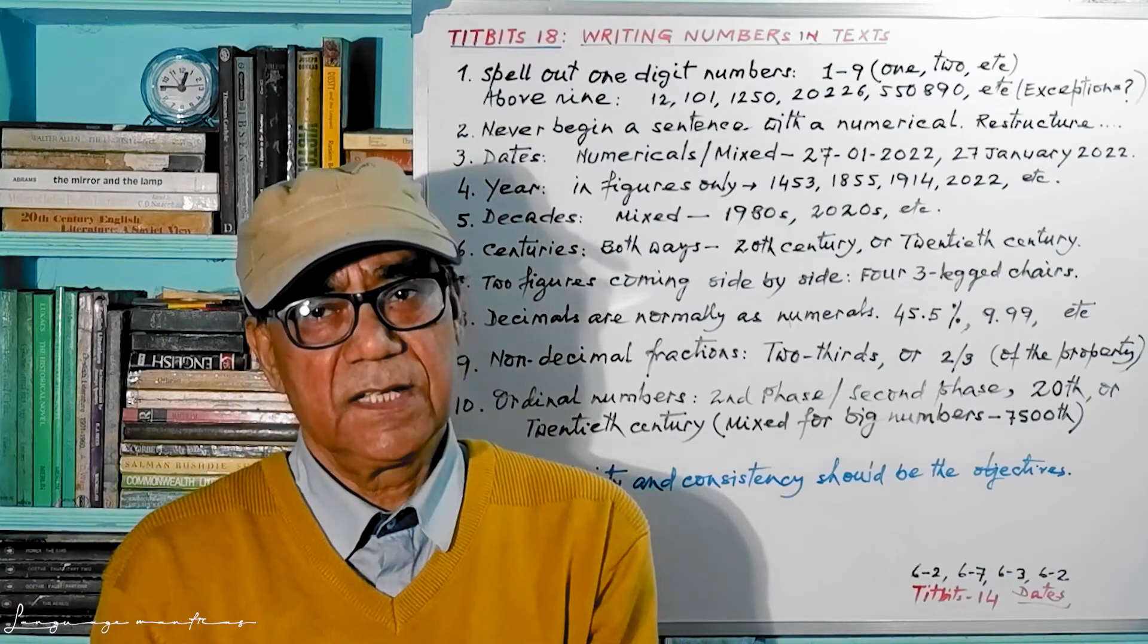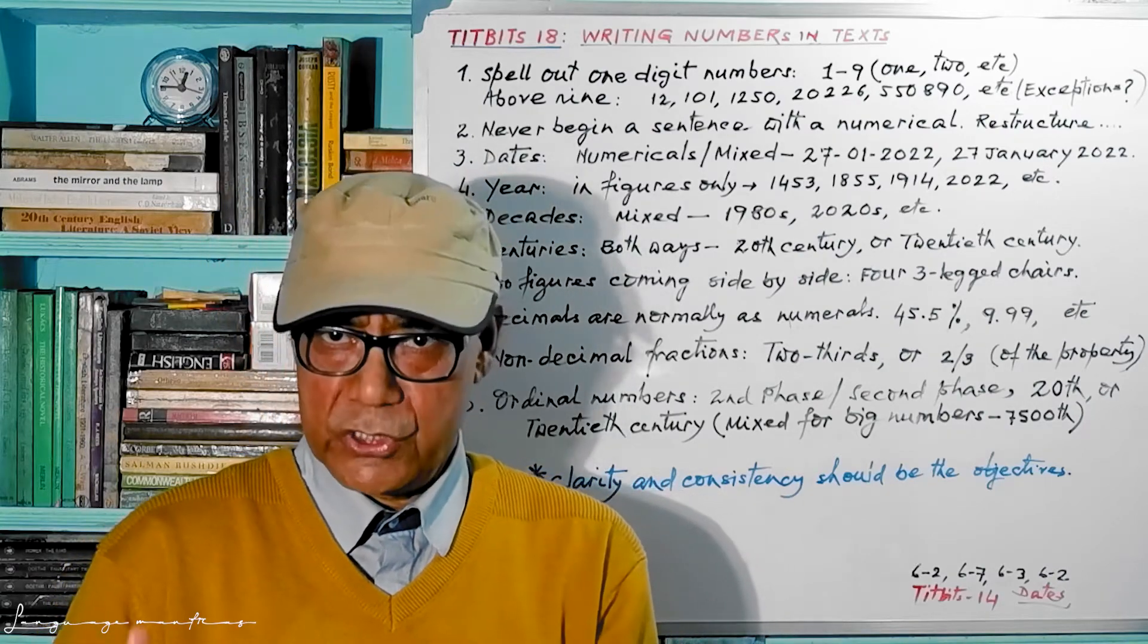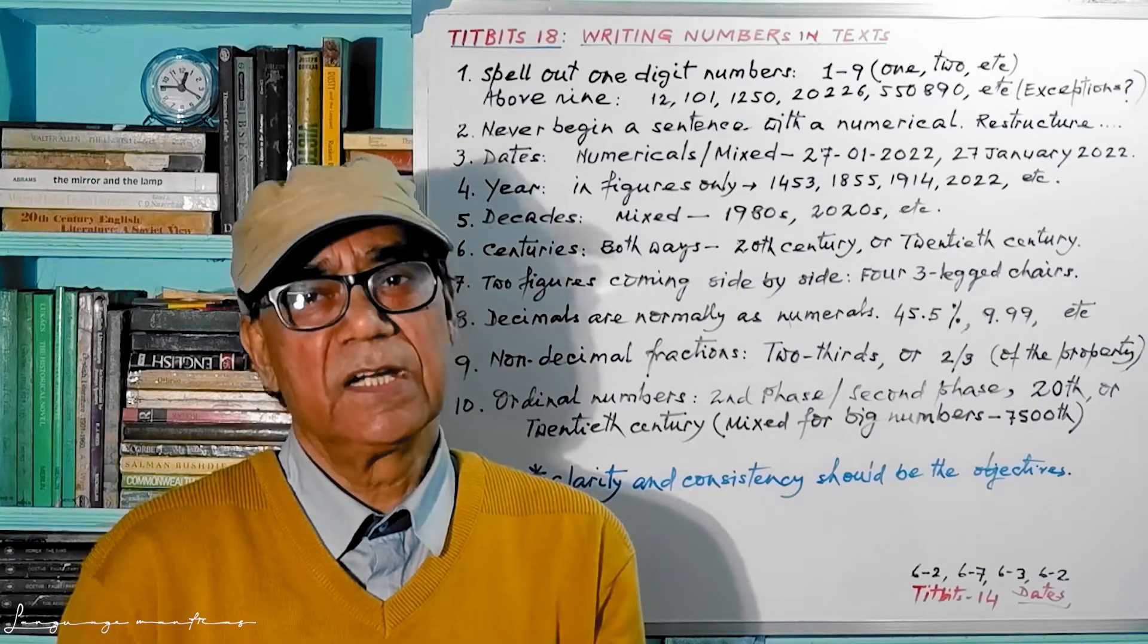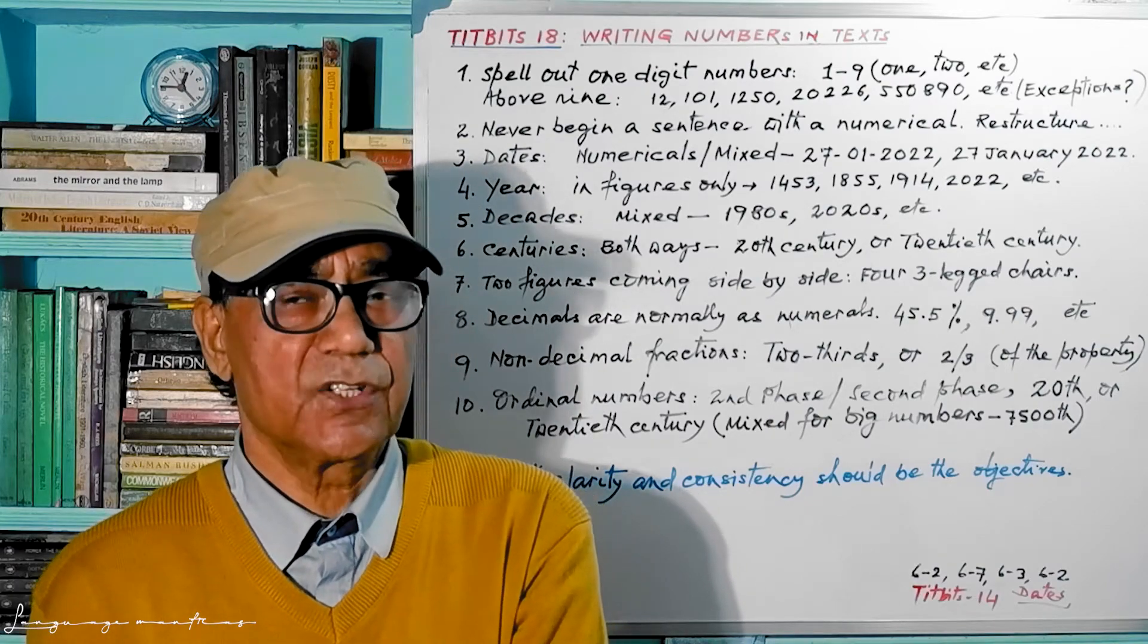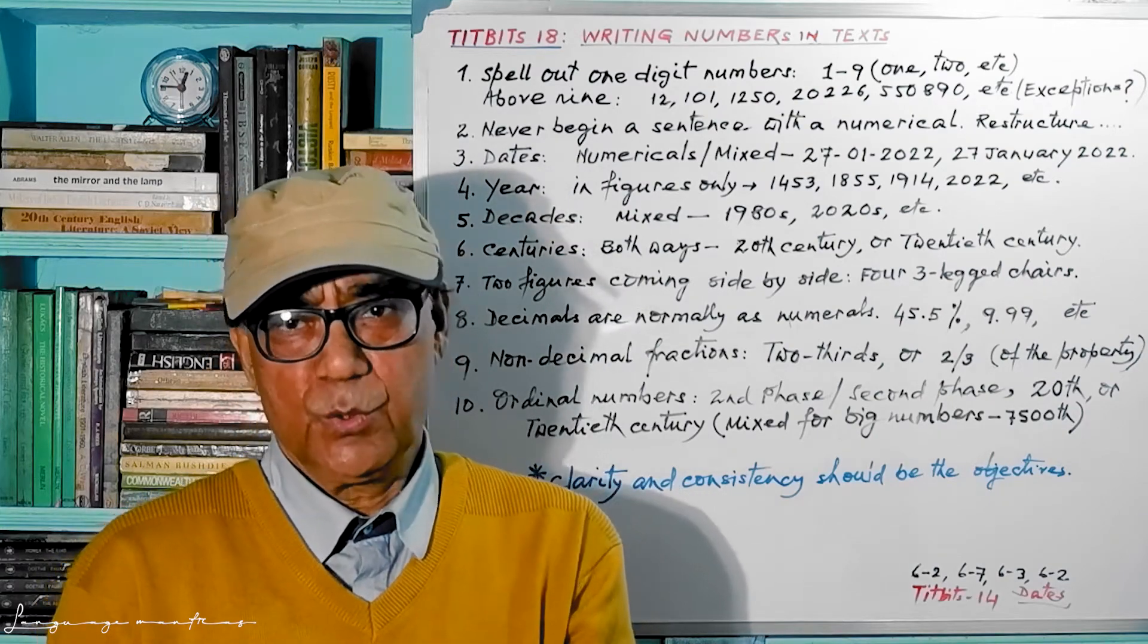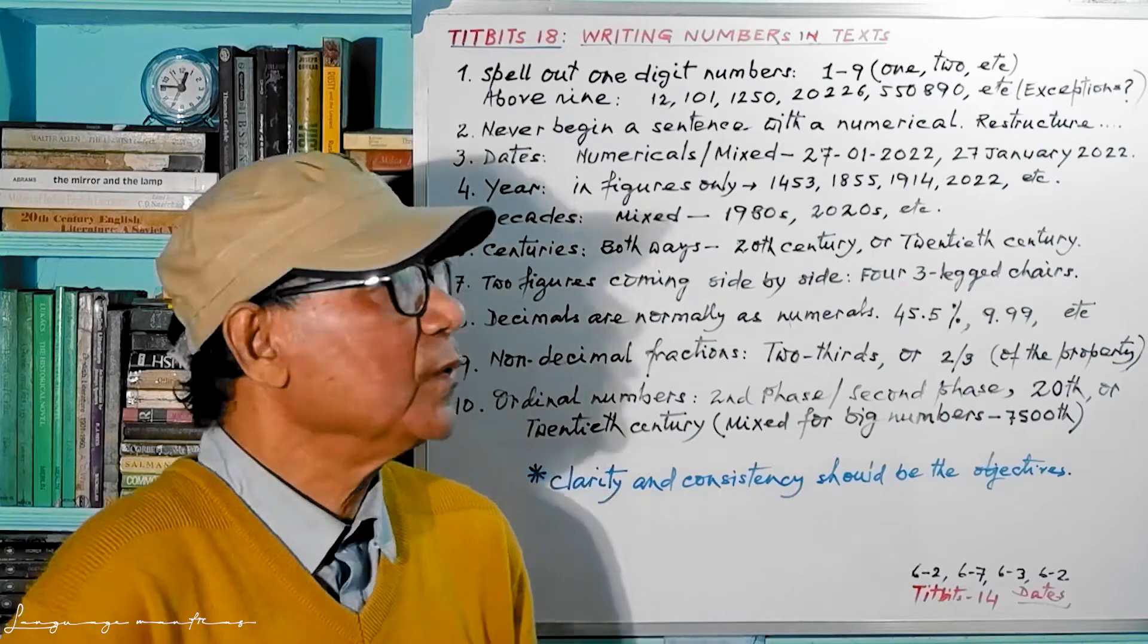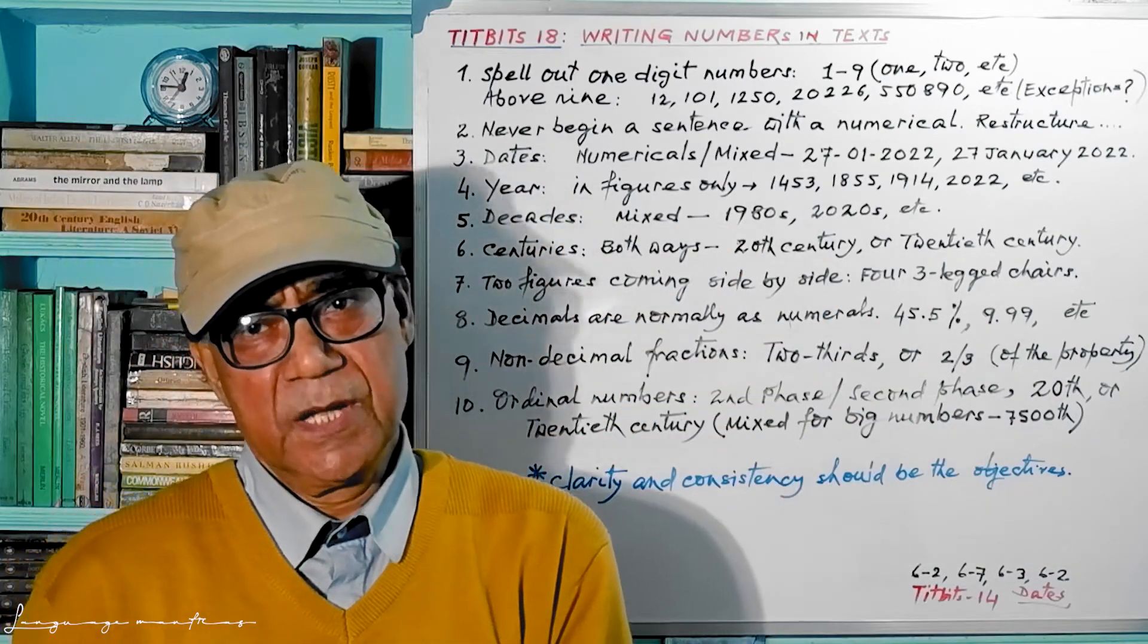In the year 1889, Charlie Chaplin was born, or Charlie Chaplin was born in 1889. So simple, just restructure it. Don't use the figure in the beginning. That is the main issue. There is no grammatical mistake here, but it's a matter of convention.